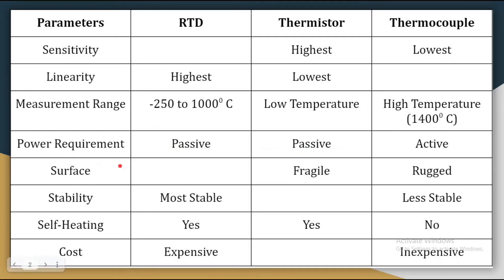If we talk about surface durability, thermistor is fragile and thermocouple is rugged. When we talk about stability, RTD is the most stable among all three, and thermocouple is the least stable.